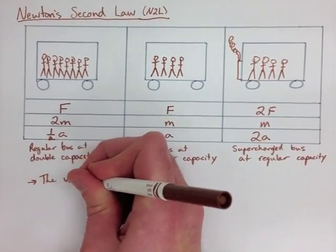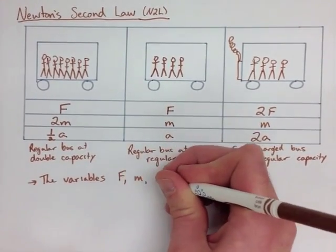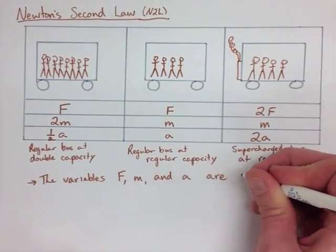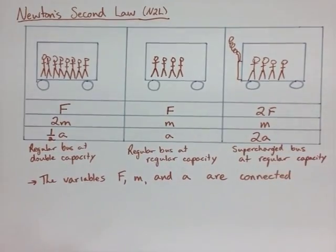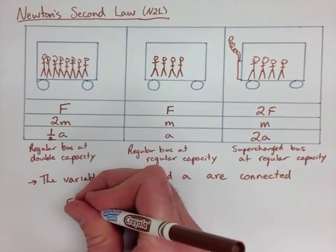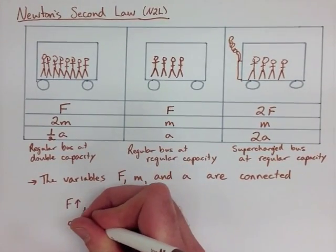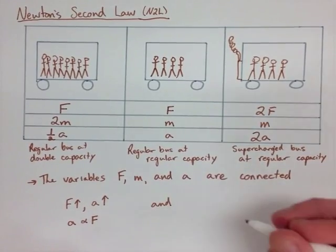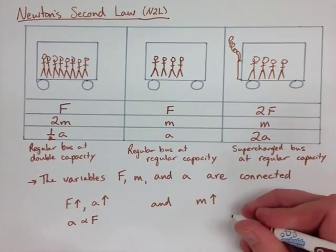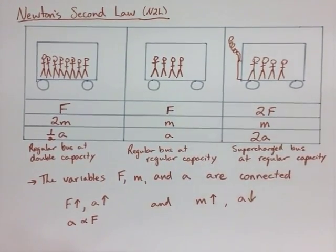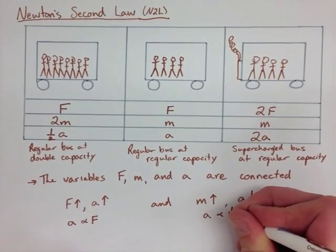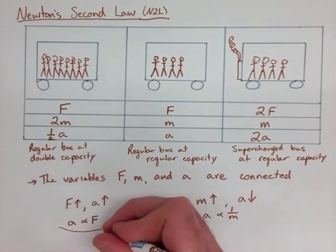Looking at this experiment that we've put together here, we can conclude that F, M, and A are all connected. If we look at F and A, for instance, when the force goes up, the acceleration goes up. That means A is proportional to F. And if the mass goes up, the acceleration goes down. What that means is A is inversely proportional to M.